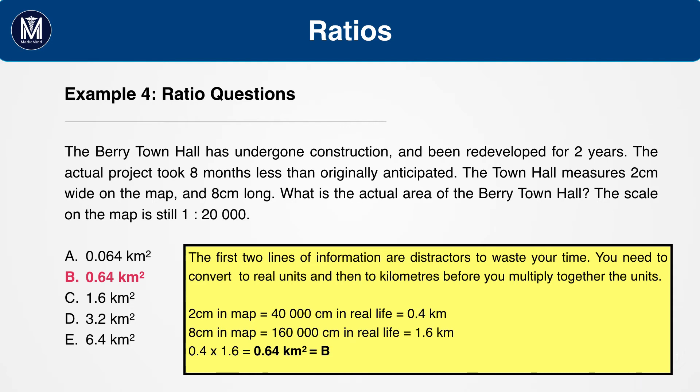2 centimetres in the map equals 40,000 centimetres in real life, which equals 0.4 kilometres. 8 centimetres in the map equals 160,000 centimetres in real life, which equals 1.6 kilometres.